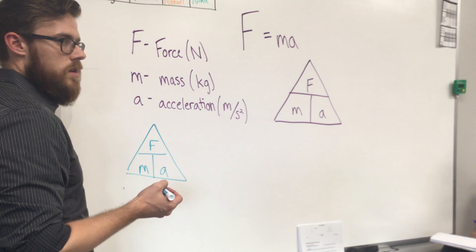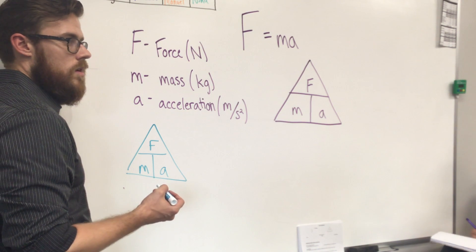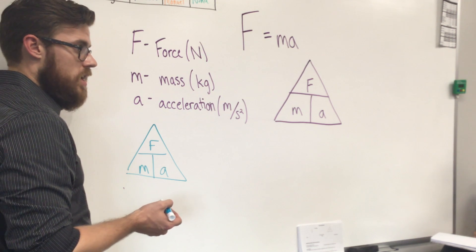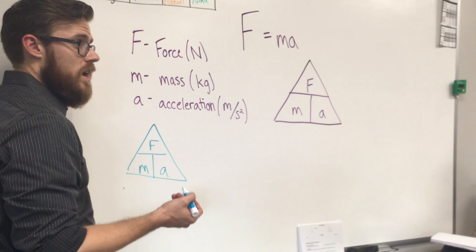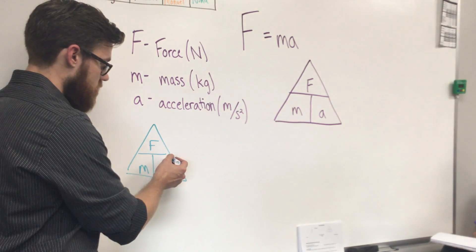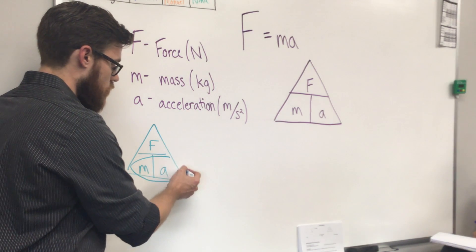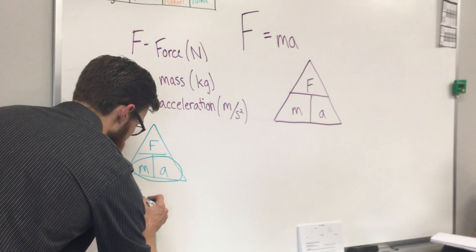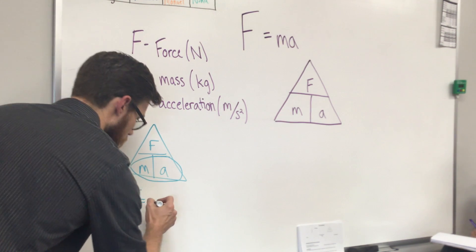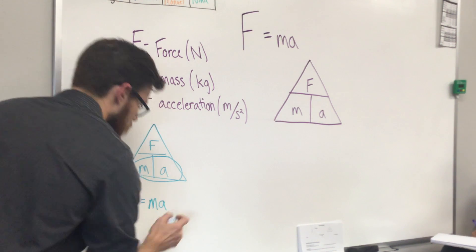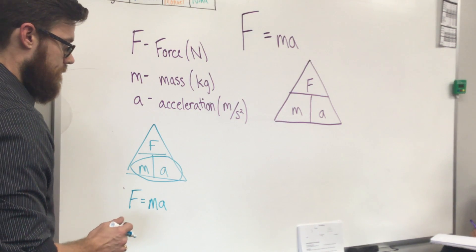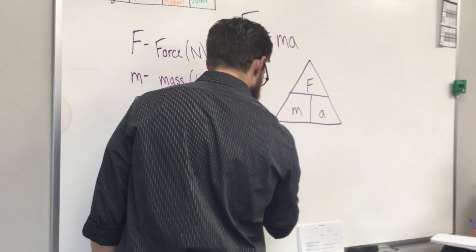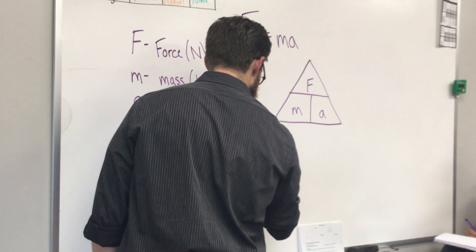Anytime you don't know which formula to use, set up the triangle and circle whatever is given. If you're trying to find force, then mass and acceleration are given to you. Circling mass and acceleration tells you your formula: force equals mass times acceleration.